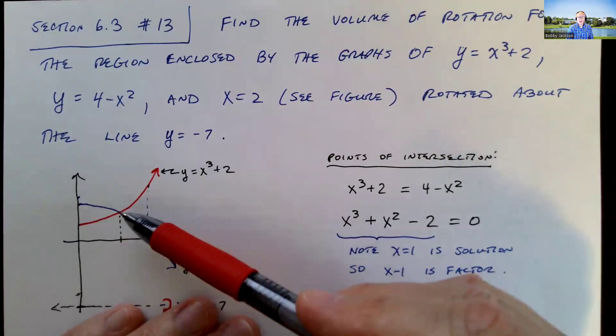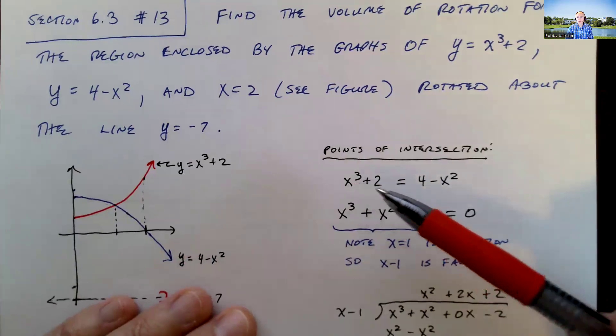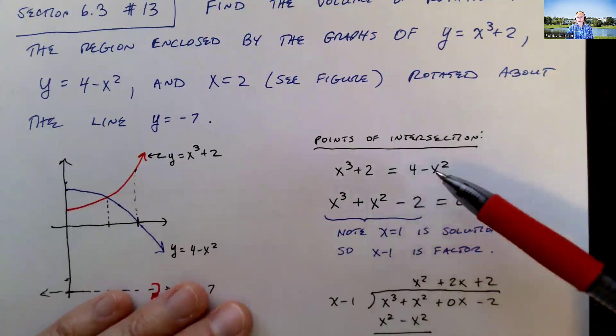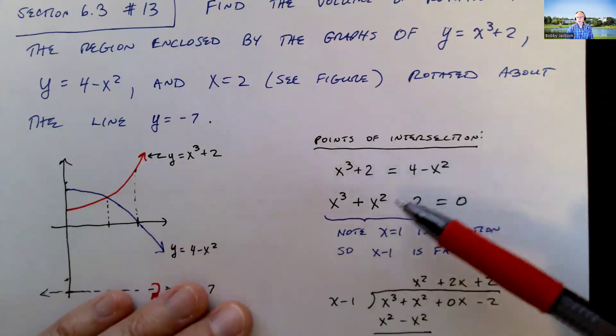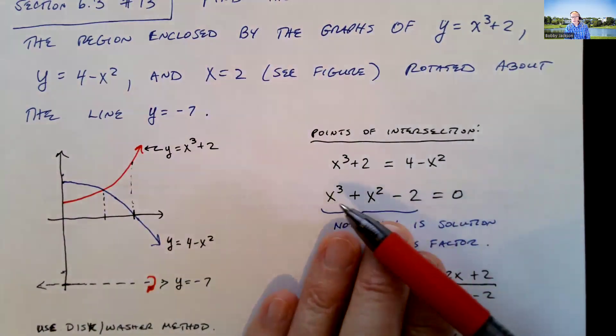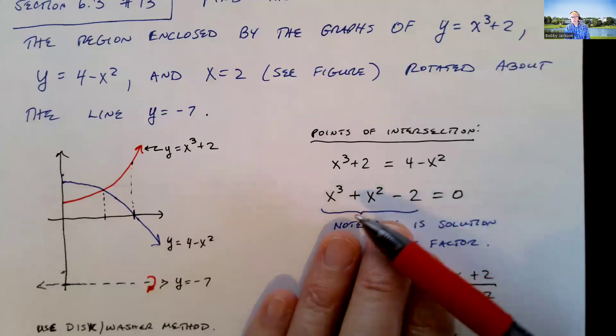Now we do want to find that point of intersection there. So when we equate x cubed plus 2 equal to 4 minus x squared, solve that equation for x. I'm going to add x squared to both sides and subtract 4. 2 minus 4 is negative 2, so we've got this set equals 0. Now this is not something that we're going to be able to factor.